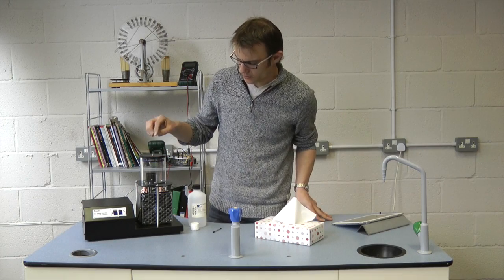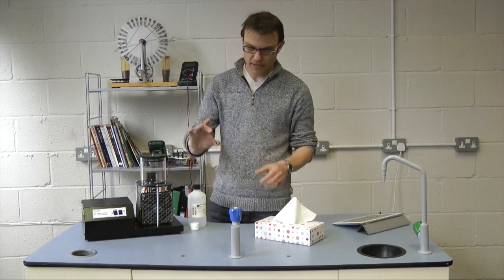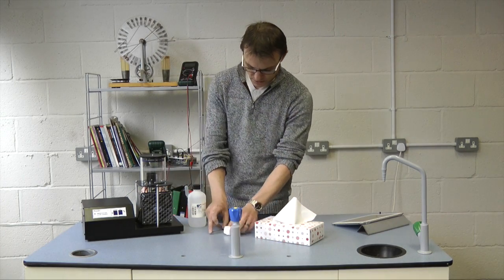Pretty much everything you need to get this up and running is in the box. So you'll receive a cloud chamber, a radioactive source which is very weakly alpha emitting, and a small polystyrene biscuit.